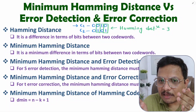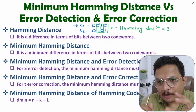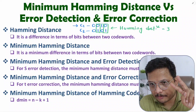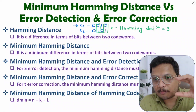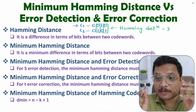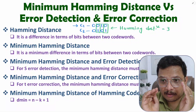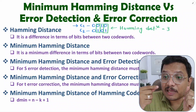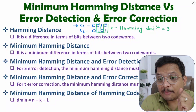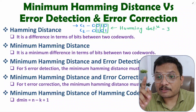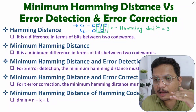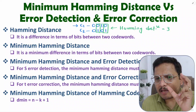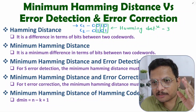Minimum hamming distance is the minimum difference in terms of bits between two code words, but it is computed for a system. Hamming distance is computed for two code words, while minimum hamming distance is computed for a system — for example, a 7,4 hamming code. By a 7,4 hamming code we can generate 16 code words, and the minimum hamming distance among all those 16 code words is the system's minimum hamming distance.